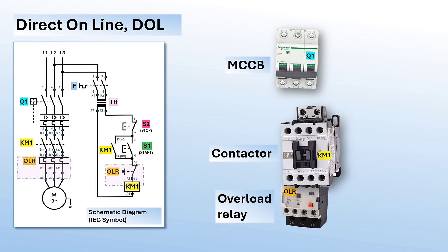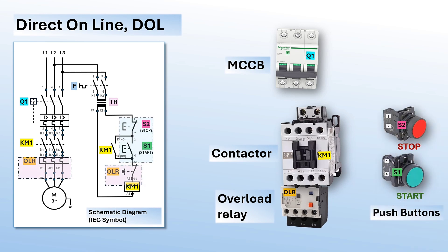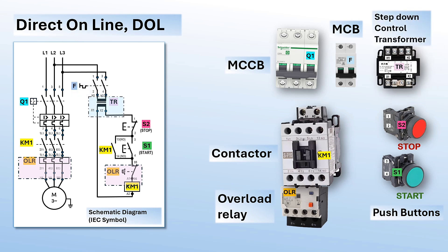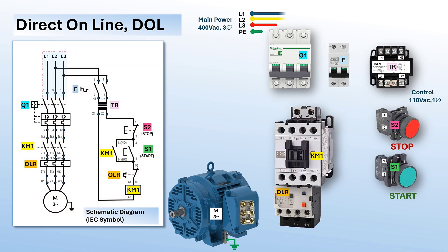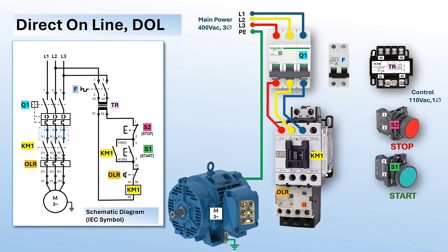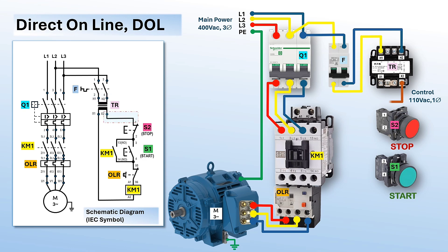The secondary components are control devices. Their requirements vary depending on the application of the motors driving the equipment. For this lecture, we use start and stop push buttons with momentary held contacts, a miniature circuit breaker or MCB, and a step-down transformer for the control circuits. This is a sample schematic diagram of a DOL starter. The diagram has two sections: the power and the control diagram. Please note that in some DOL starter setups, a control transformer is not required if the contactor coil and other control devices have the same voltage rating as the main power supply.